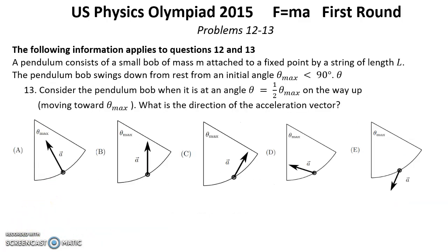Question 13. Consider the pendulum bob when it is at angle theta equal one half theta maximum on the way up moving toward theta maximum. What is the direction of the acceleration vector?